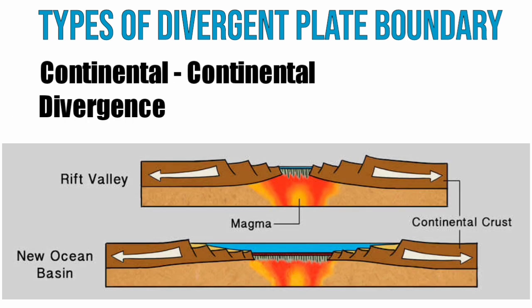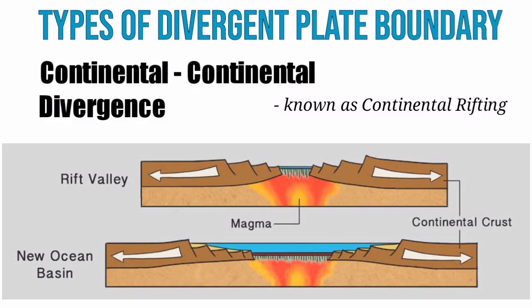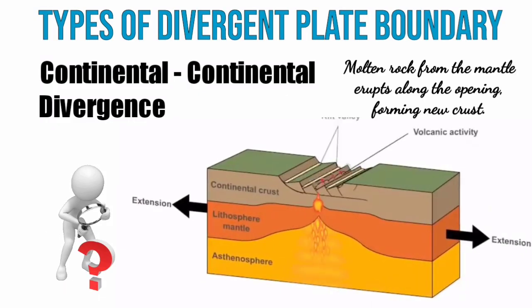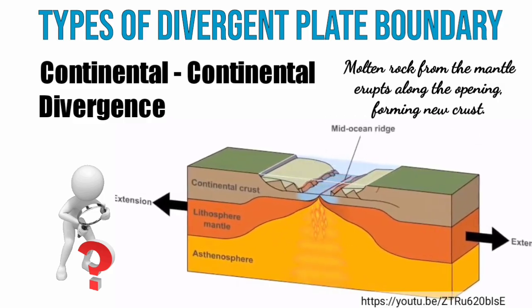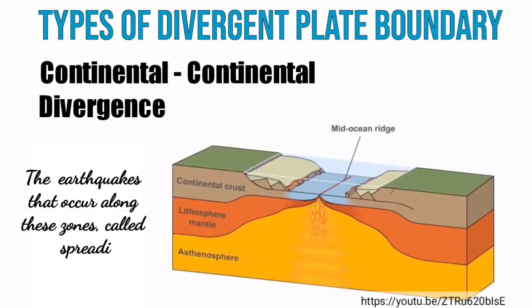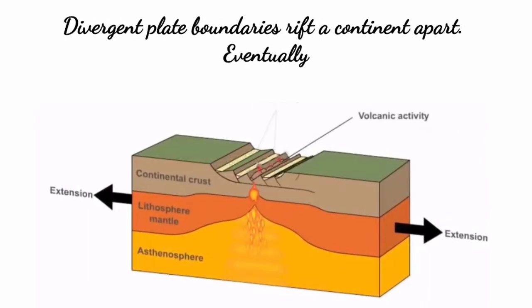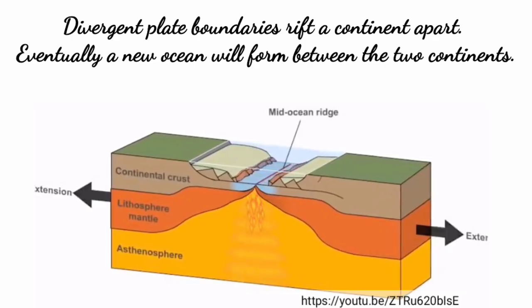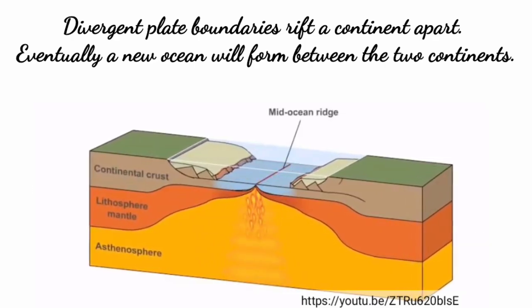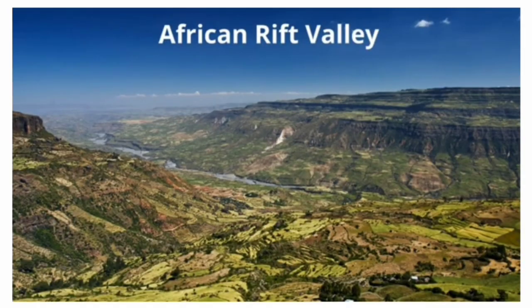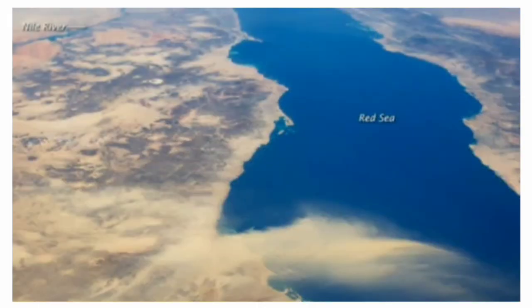The second type of divergent plate boundary is the continental-continental divergence, known as continental rifting. This leads to the formation of rift valleys, which later become a new ocean basin. When this happens, molten rock from the mantle erupts along the opening, forming new crust. The earthquakes that occur along these cold spreading centers are relatively small. Divergent plate boundaries rift a continent apart, and eventually a new ocean will form between the two continents. Examples of continental-continental divergence are the African Rift Valley and the Red Sea, which was formed by the divergence of the African Plate and Arabian Plate.